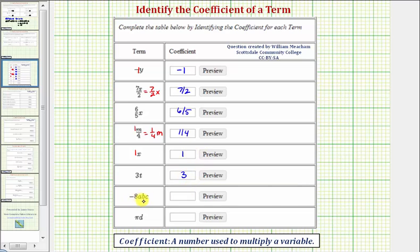Next we have negative eight abc, which means negative eight times abc, and therefore the coefficient is negative eight.